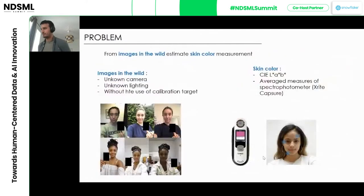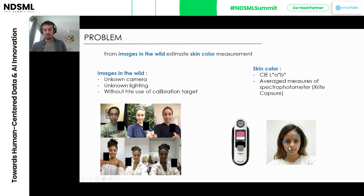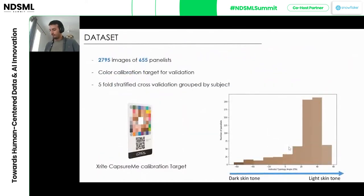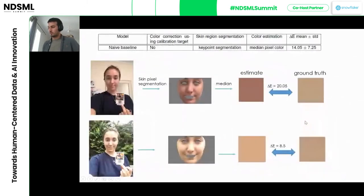Inspired by these two approaches, the problem we're trying to solve is: given an image taken with a random, unknown camera under unknown lighting conditions, estimate a skin color measurement. By skin color measurement we mean what's done in-store: a device scans three points on the face, averages the color measurement, and produces what we call the skin color measurement — that's what we're trying to reproduce with our models. We collect this kind of image data over about six or seven panels and get a skin tone distribution, which like many ML problems has some class imbalance that needs to be addressed.